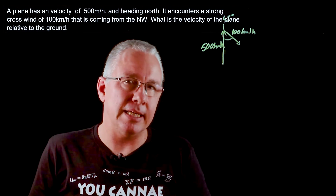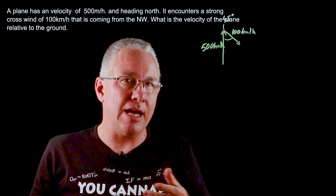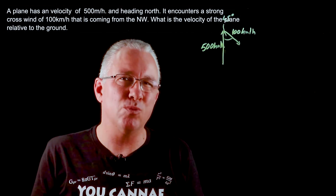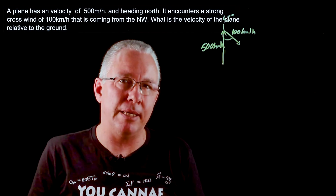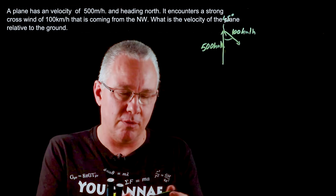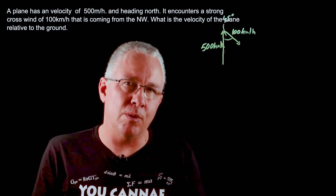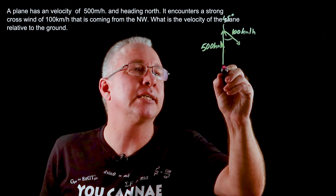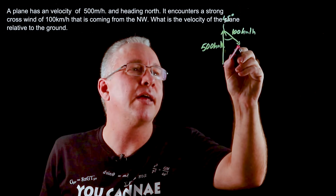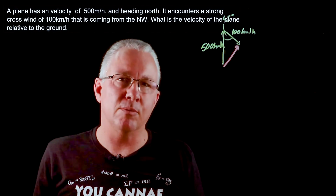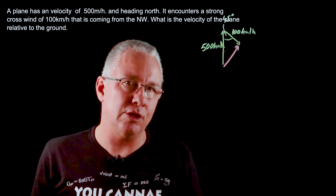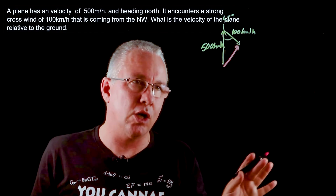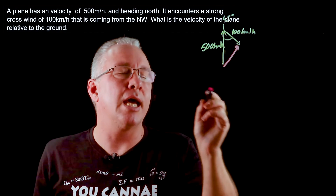What we're working out here is the ground velocity — in other words, what does the plane appear to do from the ground. We have a resultant vector, and that's what the plane is now doing. It's traveling a little bit slower and it's moving off course.